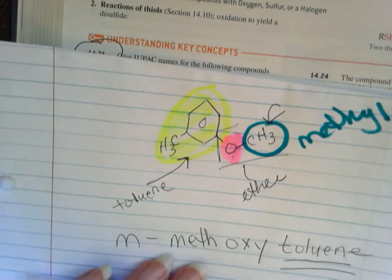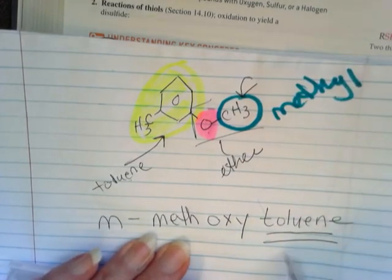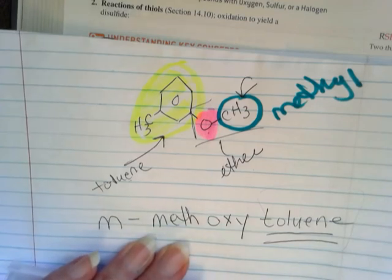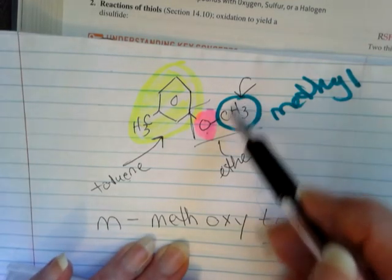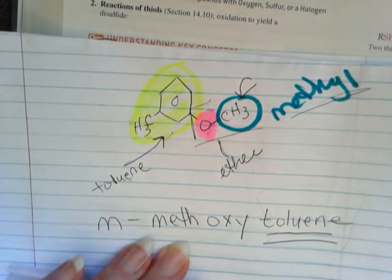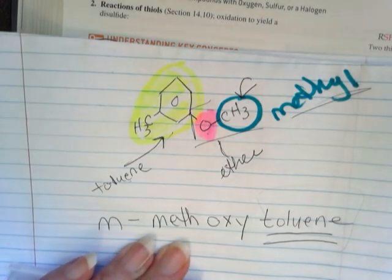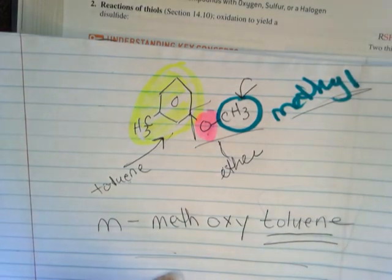So again, I understand that, especially when it comes to giving priority to when is this a parent name versus when is an ether a parent name. I get it. That's really difficult. So if when you're taking your test, you're circling things and you're showing me methyl, ether, toluene, I can give you some partial credit at least if the name is completely wrong.